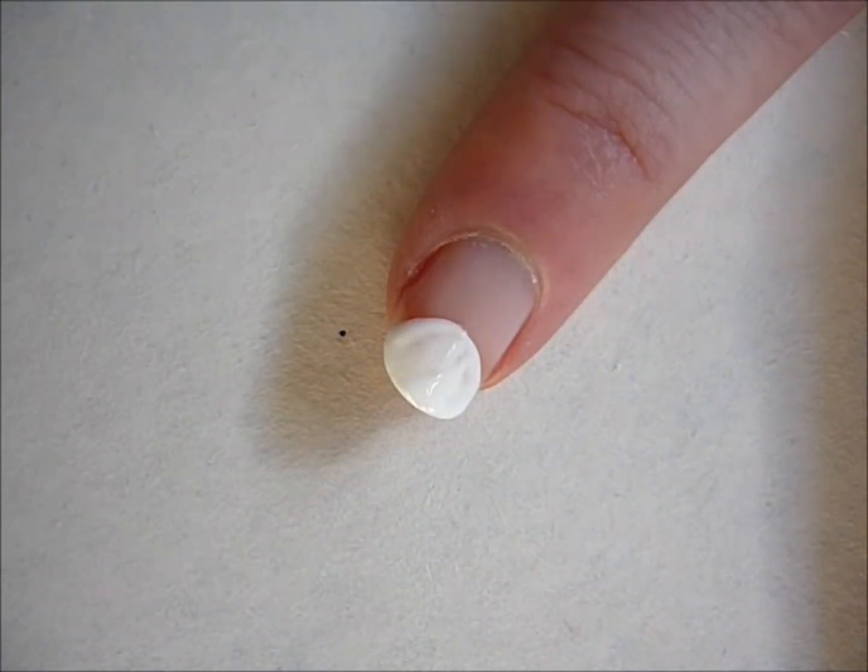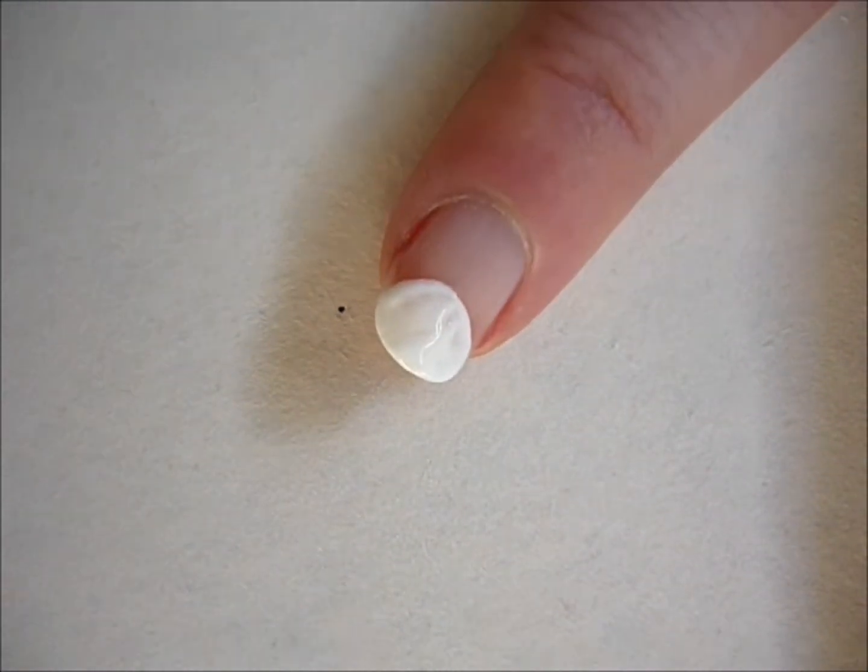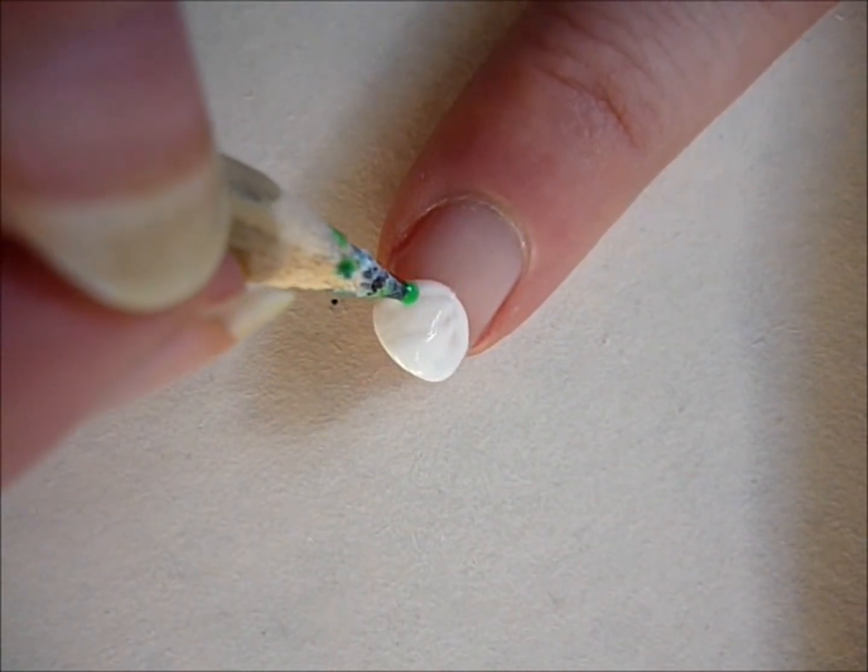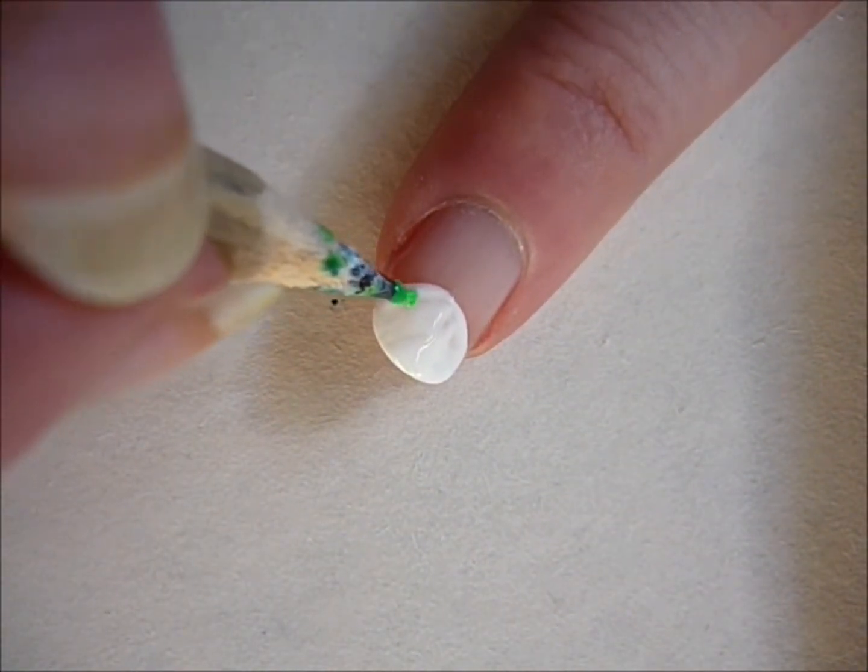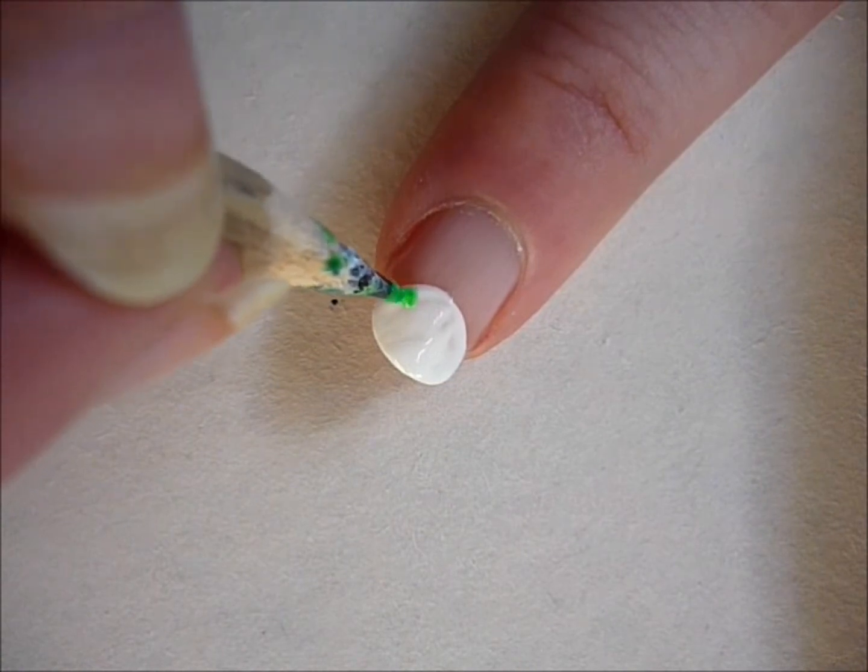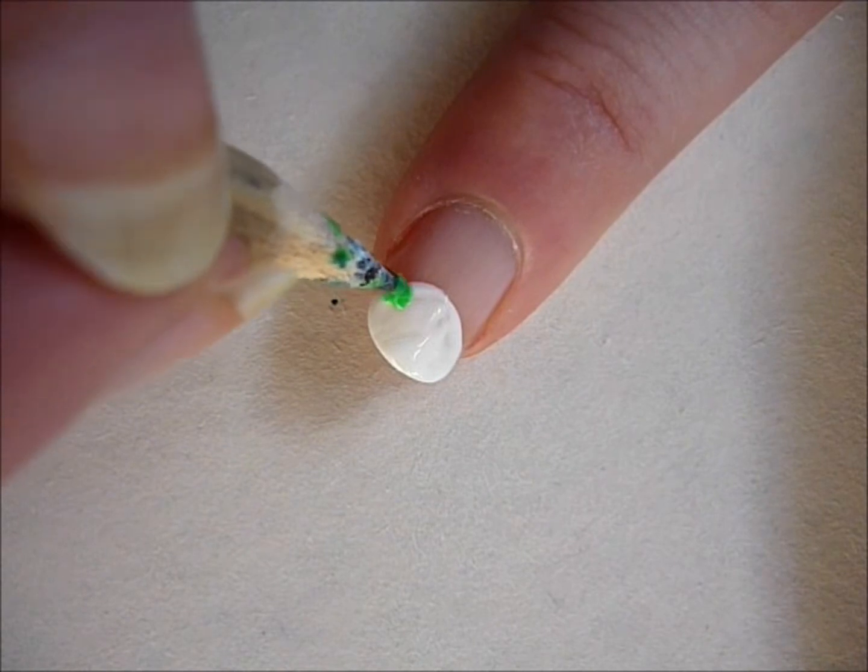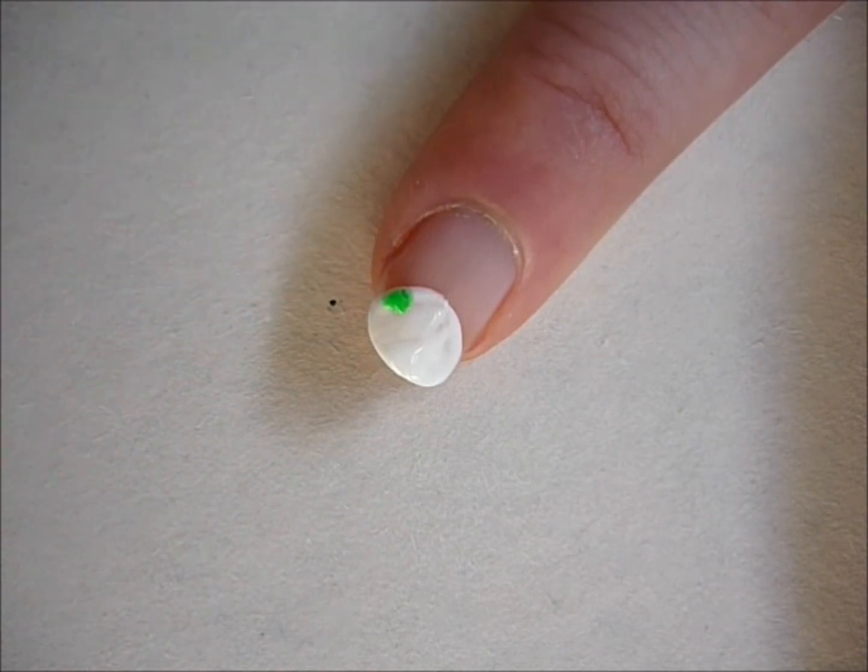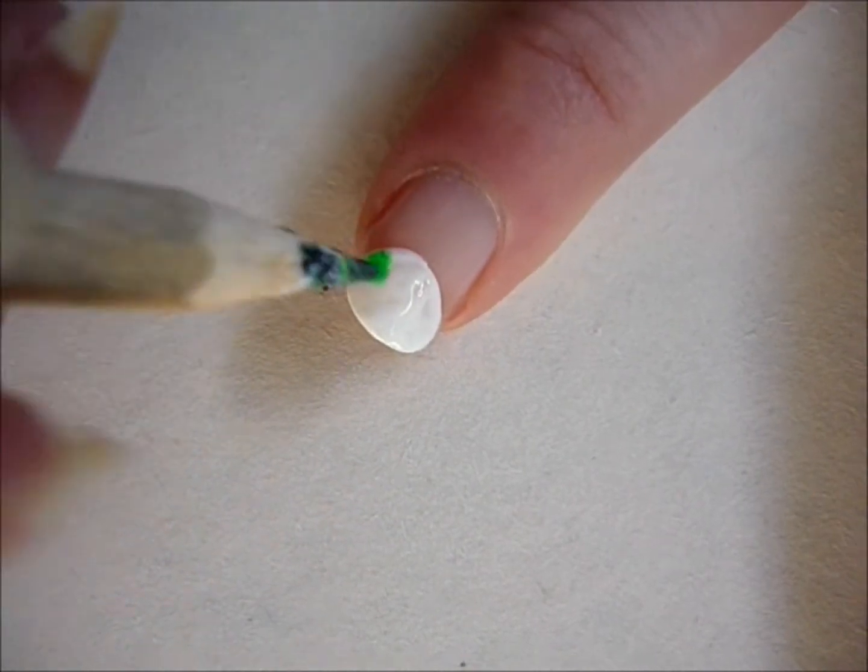Once your white has dried, apply green dots to complete the egg design. You can use a pencil or a toothpick.